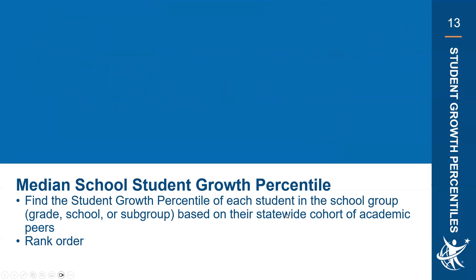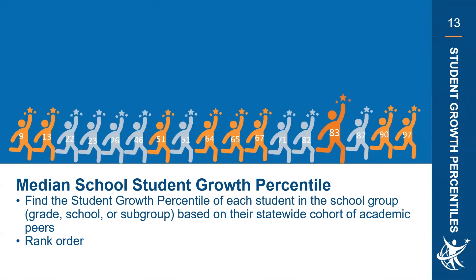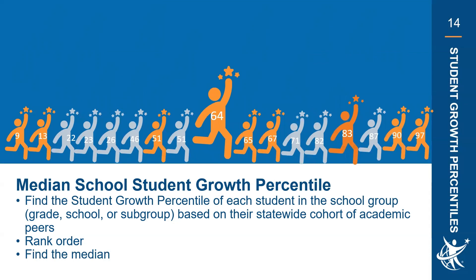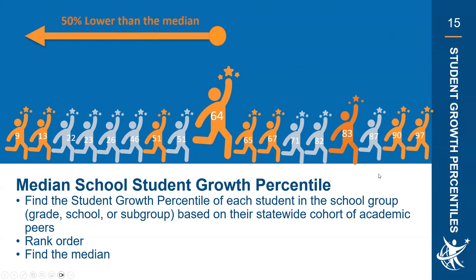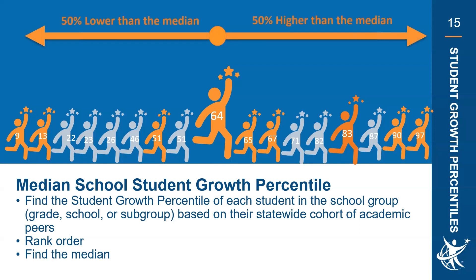The student growth percentiles for each student are ranked from highest to lowest, and the median — or middle score — is determined for that student group. For example, a median school student growth percentile of 64 means that 50% of the students in the group had student growth percentiles lower than 64, and 50% had scores higher than 64. This group could be third grade students, Hispanic or Latino students, or special education students.